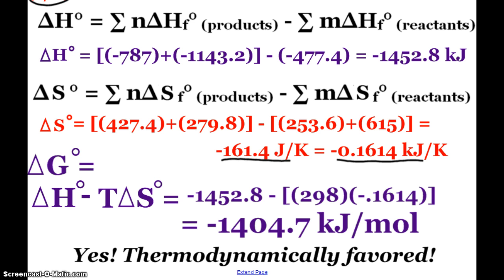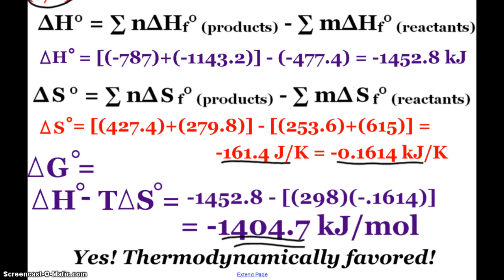And I end up with a ΔG of negative 1,404.7 kilojoules per mole, so definitely thermodynamically favored. And remember, this large value means that at equilibrium, we would have a significant amount of products. And just take note that this is very thermodynamically favored, even though we had a negative entropy change.